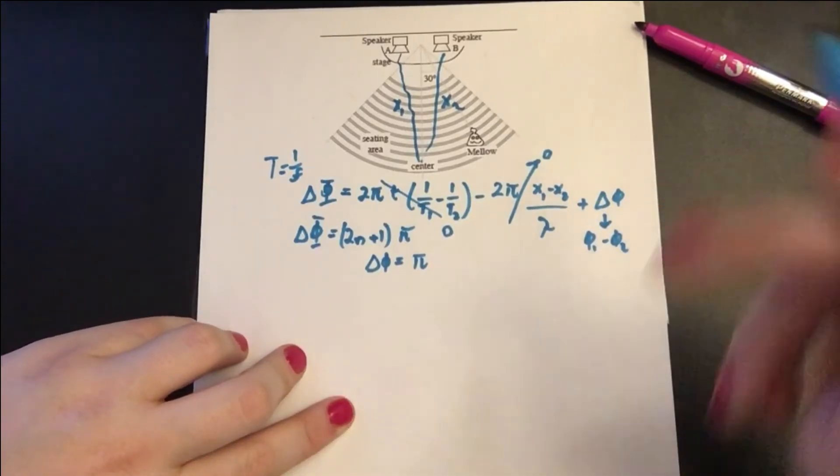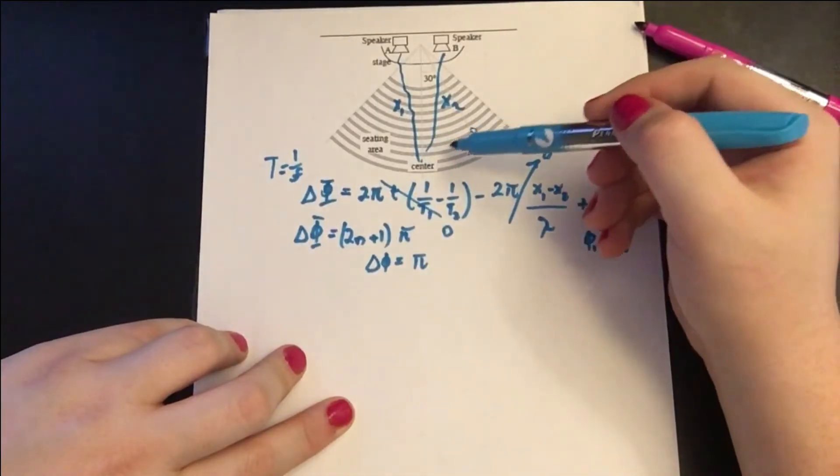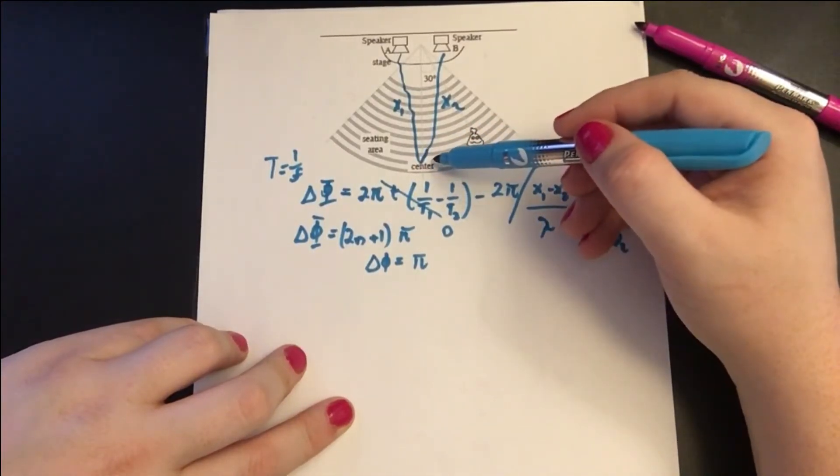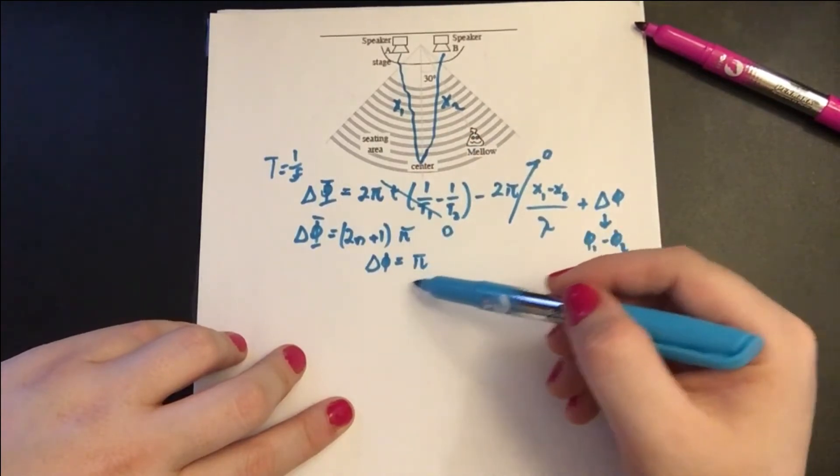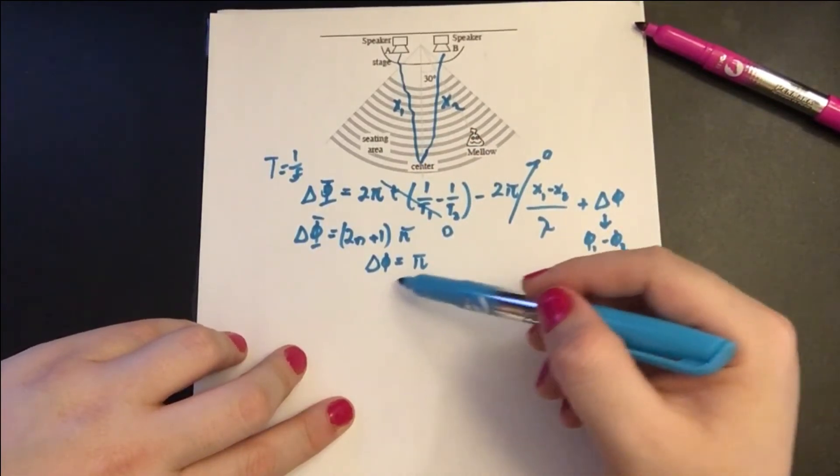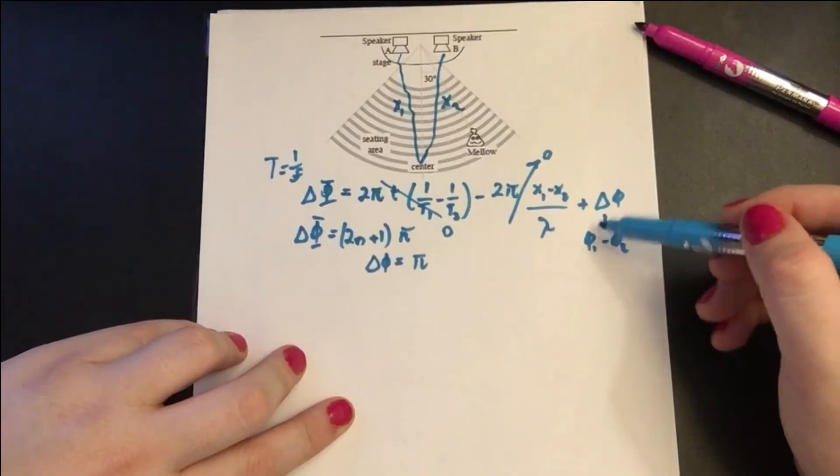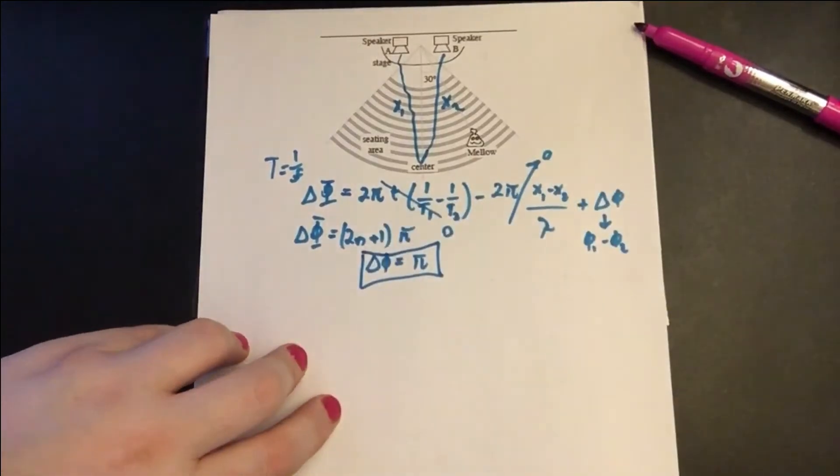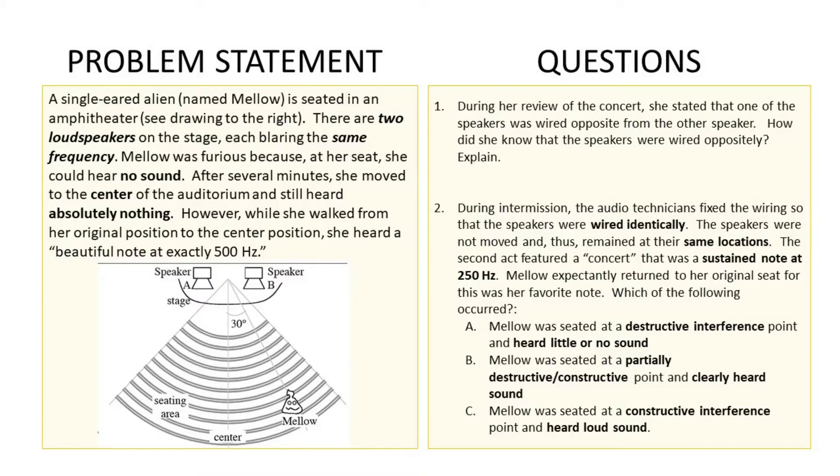And for destructive interference, the only way for there to be no sound here is for there to be destructive interference, which shows us that the value of Δφ, the change in their phase constant compared to each other, is a multiple of π.